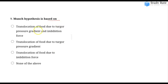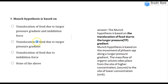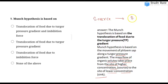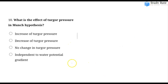The eighth question: What was the Munch hypothesis based on? Options include translocation of food due to pressure gradient, imbibition force, or both. The Munch hypothesis was based on translocation of food due to the pressure gradient. The mass flow hypothesis states that organic solutes move from the side of high concentration to the side of low concentration — from source to sink.